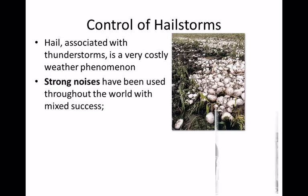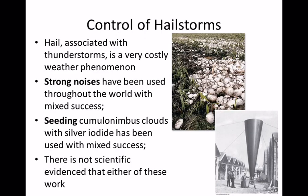Hail suppression is another attempted modification — there's an old noise generator that looks like a snake oil salesman's device. Hail falling at the wrong time can devastate a farmer's income for the season. But controlling hail is not something we can necessarily do. Remember, hail only falls from storm clouds.